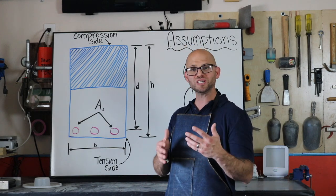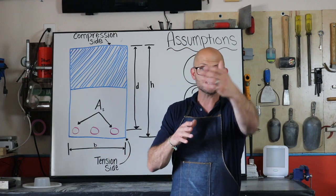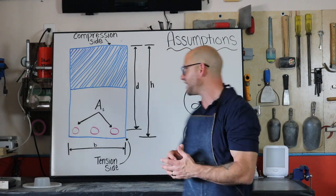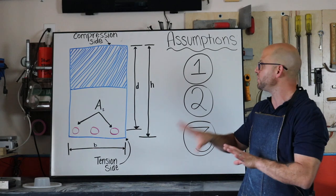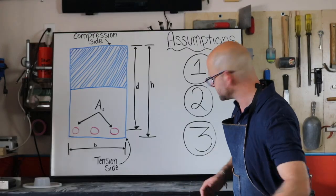If our assumption included that there was a certain amount of slip here, that the steel wasn't working with the concrete, then no matter what we did, we wouldn't be able to get this balance into our design or through our analysis.